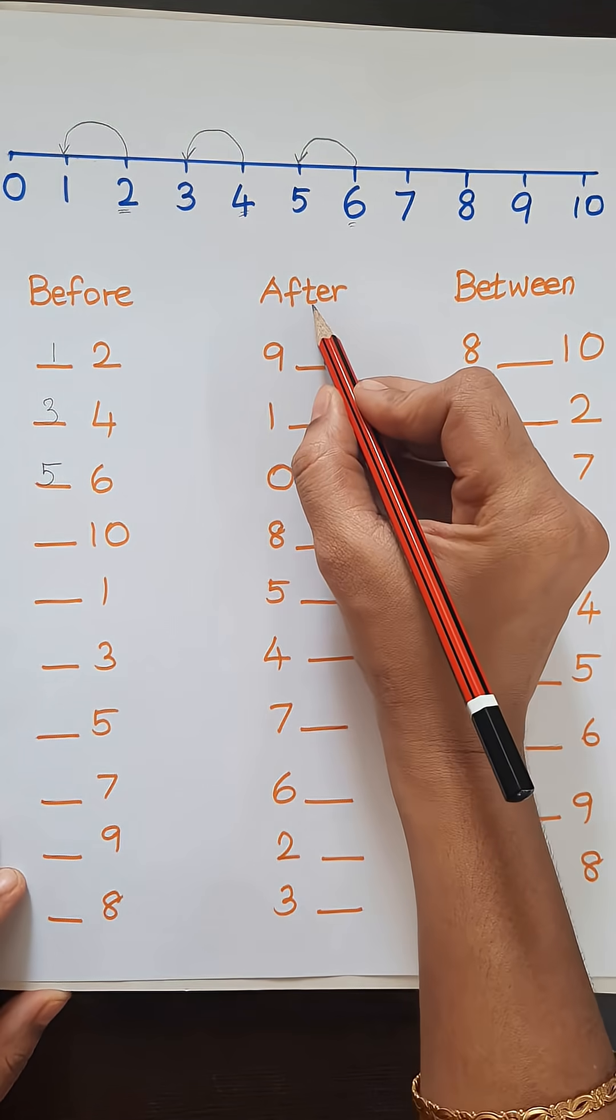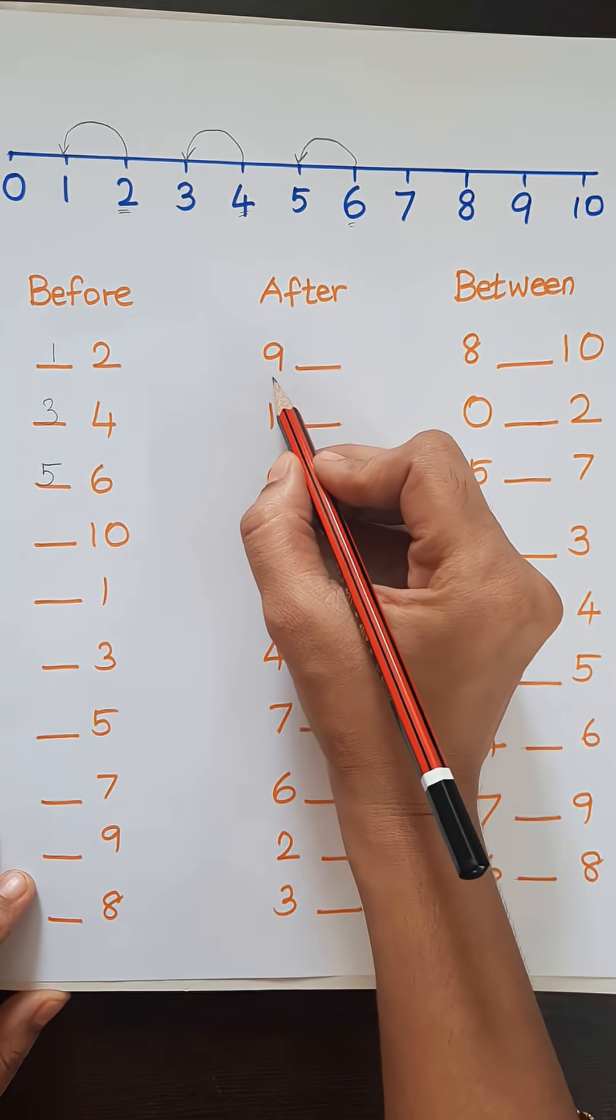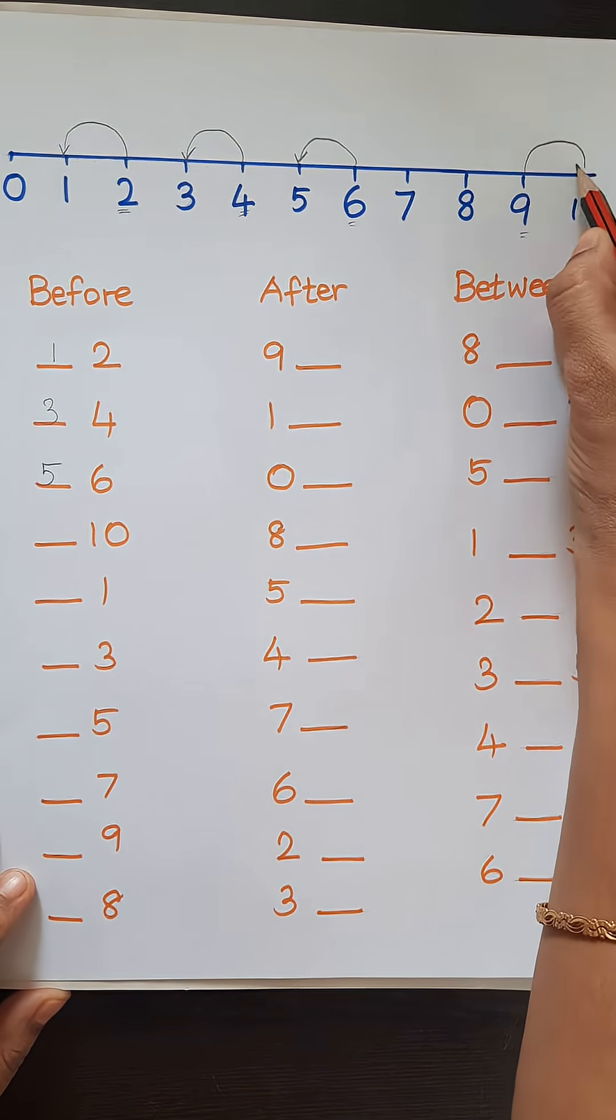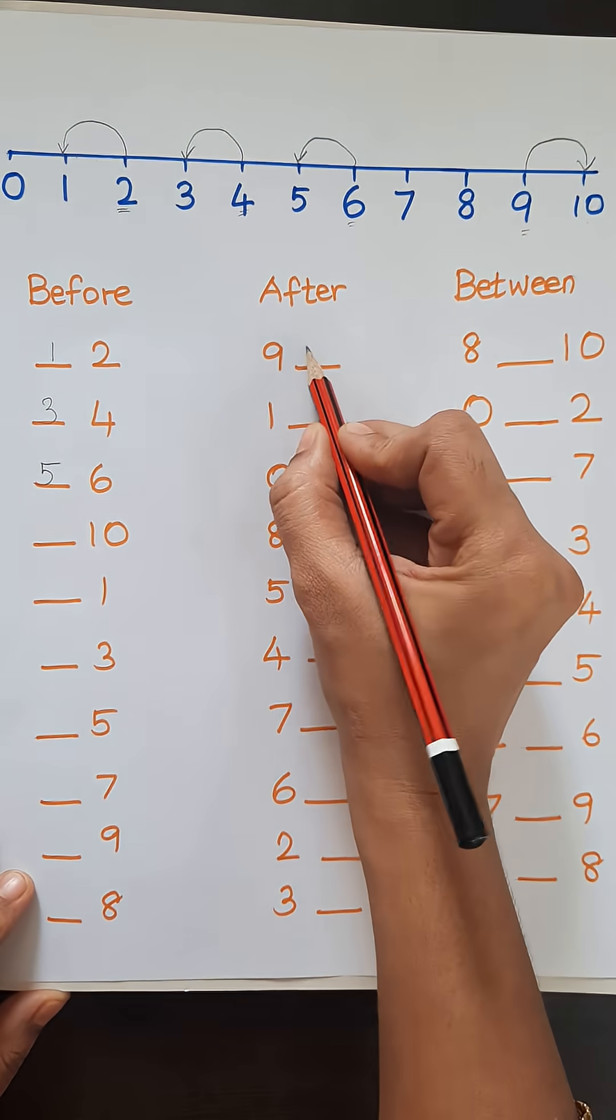Next concept is after. The given number is 9. So what comes after 9? 10. So we will write 10.